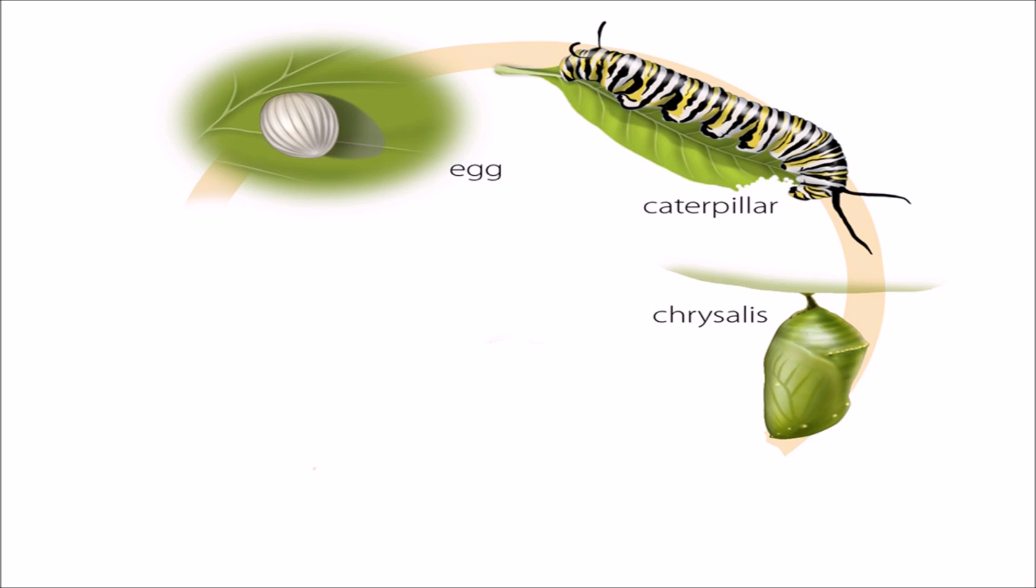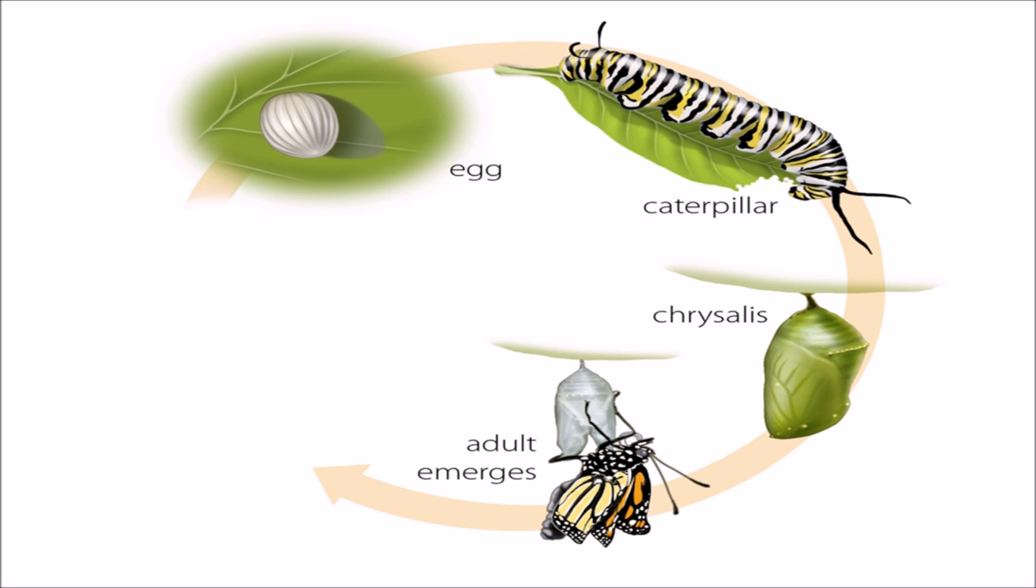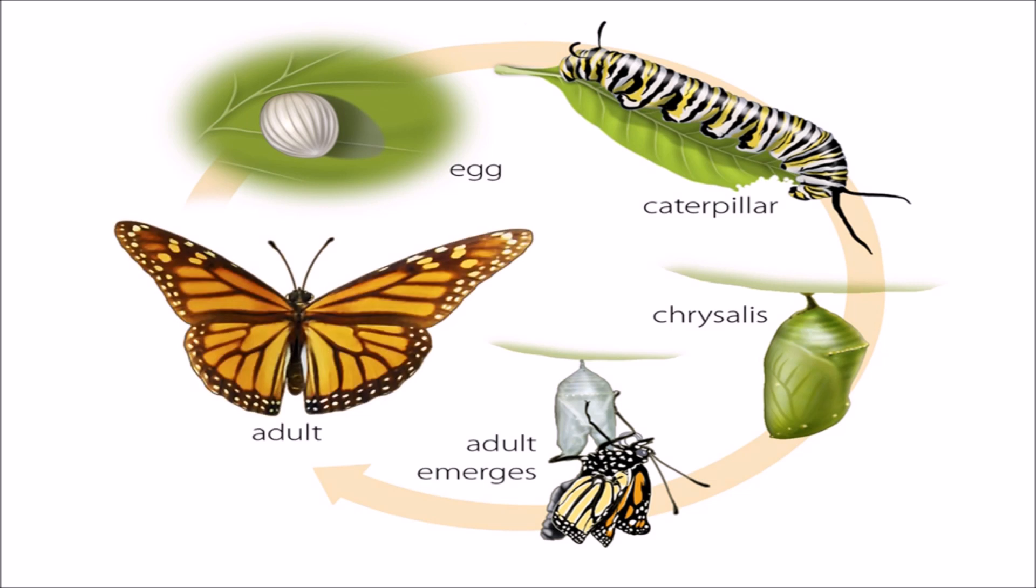Stage 4: Adult, the reproductive stage. The adult stage is when the fully-formed butterfly emerges from the chrysalis. With wings and colors, it looks beautiful. The adult's job is to mate and lay eggs, and the butterfly life cycle will start all over.